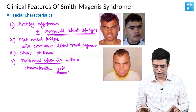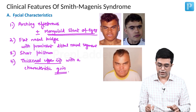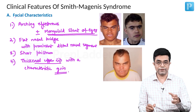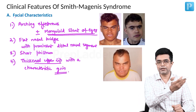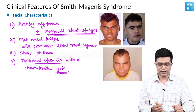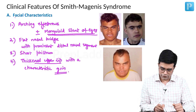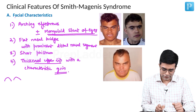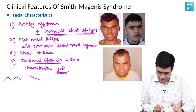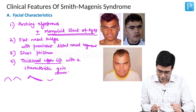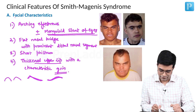Their facial characteristics are slightly different from other syndromes. The well-developed eyebrow arch in Smith-Magnese syndrome is not like what you find in Rubinstein-Taybi syndrome. In Rubinstein-Taybi, the eyebrows have a different curvature, whereas in Smith-Magnese syndrome, there is a well-developed arc forming a distinct appearance.